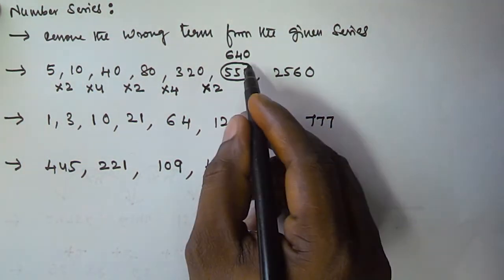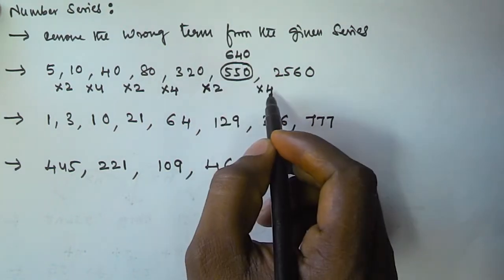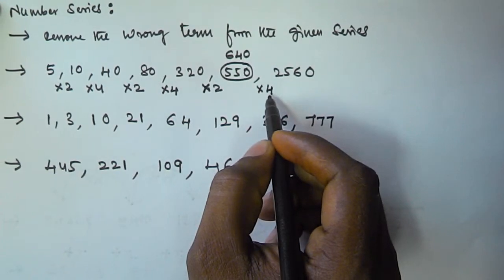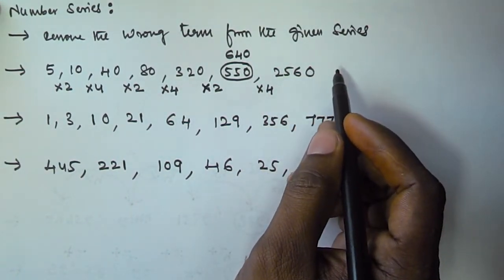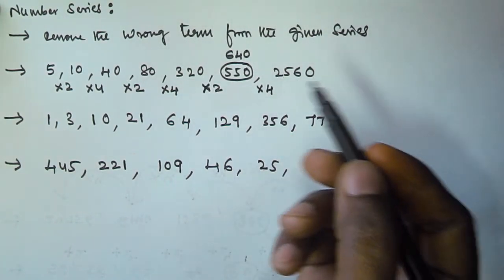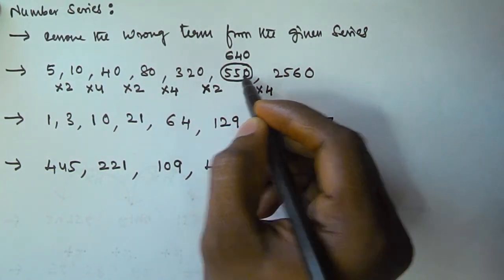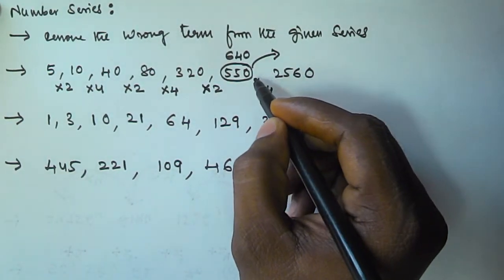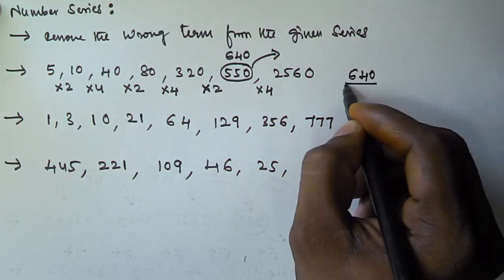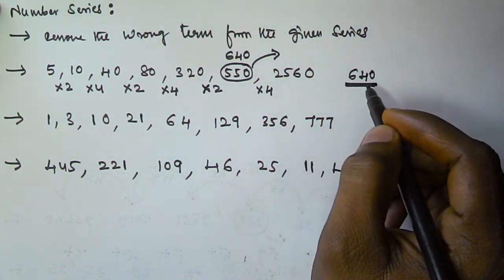If you multiply 640 into 4, you get 2560. That means the wrong term is 550. You have to remove 550 and substitute it with 640. So the wrong term in this series is 550 and the right term is 640.